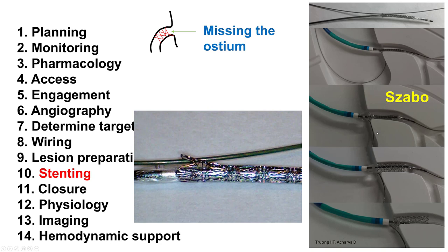The Zabo technique facilitates nailing the ostium and avoids advancing the stent too deep into the vessel. A wire goes through the osteal lesion into the target vessel, and a second wire floats into the aorta. That second wire is inserted through a proximal strut of the stent being delivered — this requires slightly deforming the stent by lifting the strut and advancing the floating wire's back end through it. The stent is then advanced, and the wire in the aorta prevents the stent from going too deep. The stent is deployed, the aortic wire is removed, and there is a little stent overhang into the aorta, nicely covering the ostium. This is an elegant technique but carries some risk, most notably a slightly increased risk of stent loss due to stent deformation.